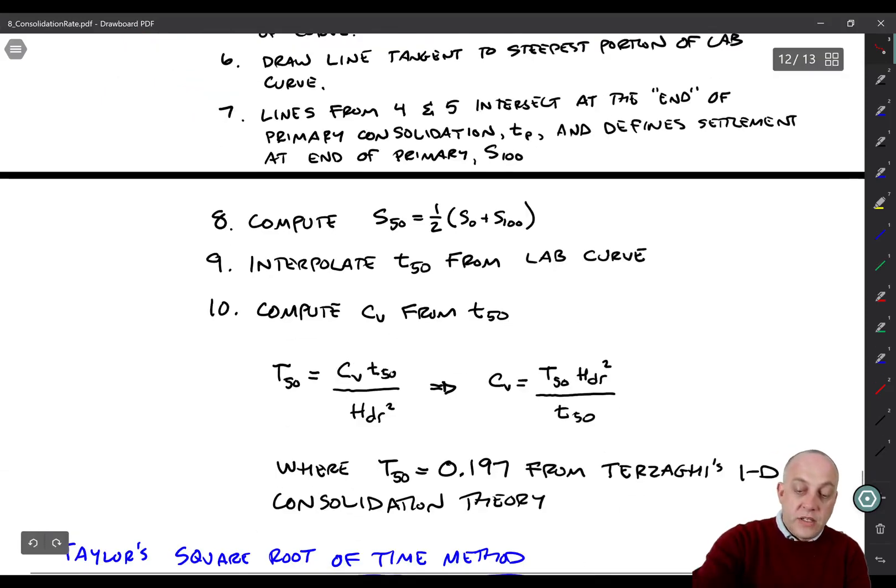We know that the definition of time factor was equal to C sub V times T over H squared, where H sub DR is the drainage path length. So what we'll do is invert that relationship for C sub V instead. Now it's the opposite thing. We know the time factor from Terzaghi's consolidation theory. We measure the time at 50% consolidation, and we know the drainage path length based on the specimen geometry. And we can calculate C sub V. And that capital T50 is 0.197. That's where the curve matching comes in. That's the theoretical value. So we now have computed C sub V.